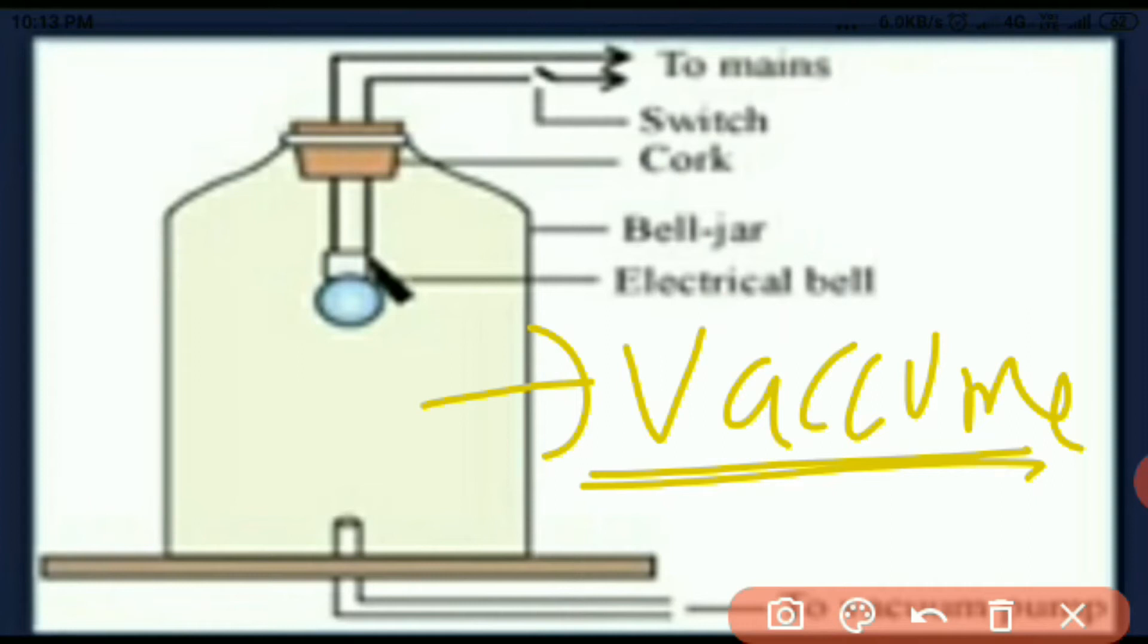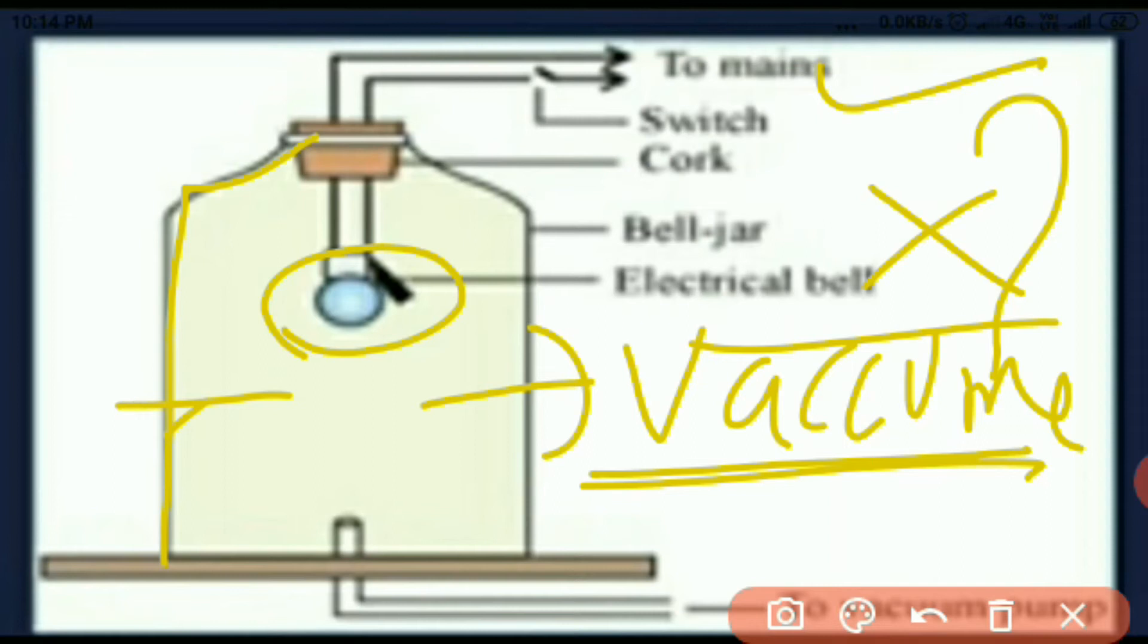Now this jar has vacuum created. When we press the switch, the electric bell will start ringing but the sound will not come out because there is vibration but we do not listen to it because the air medium is finished and vacuum is created.